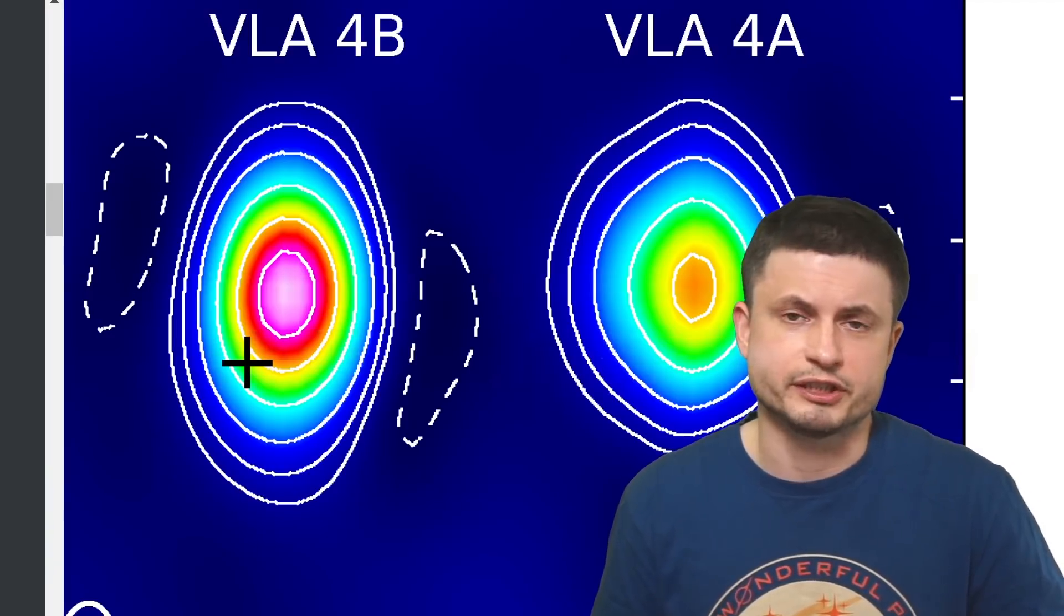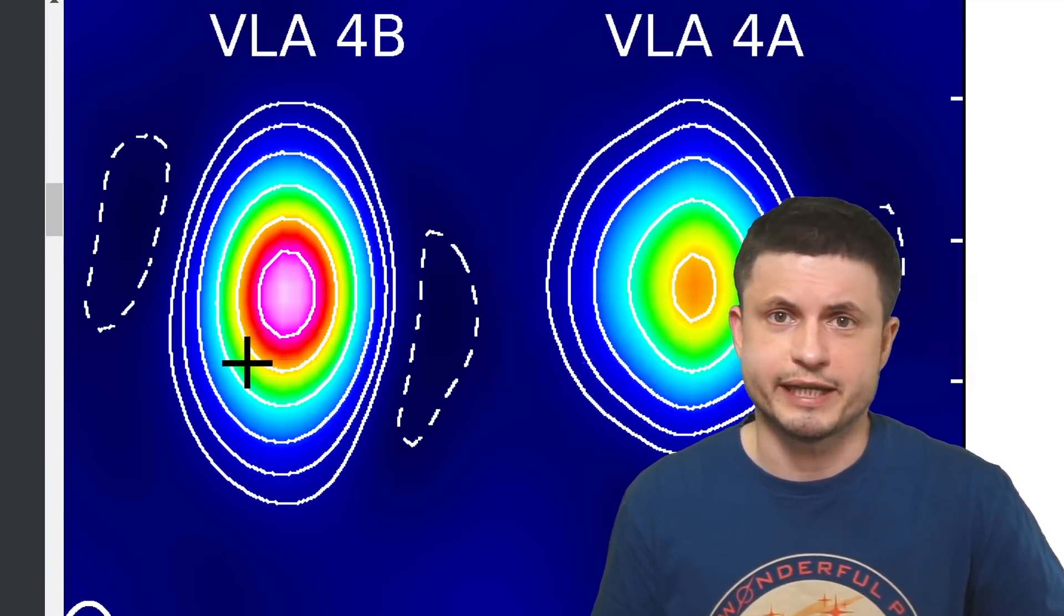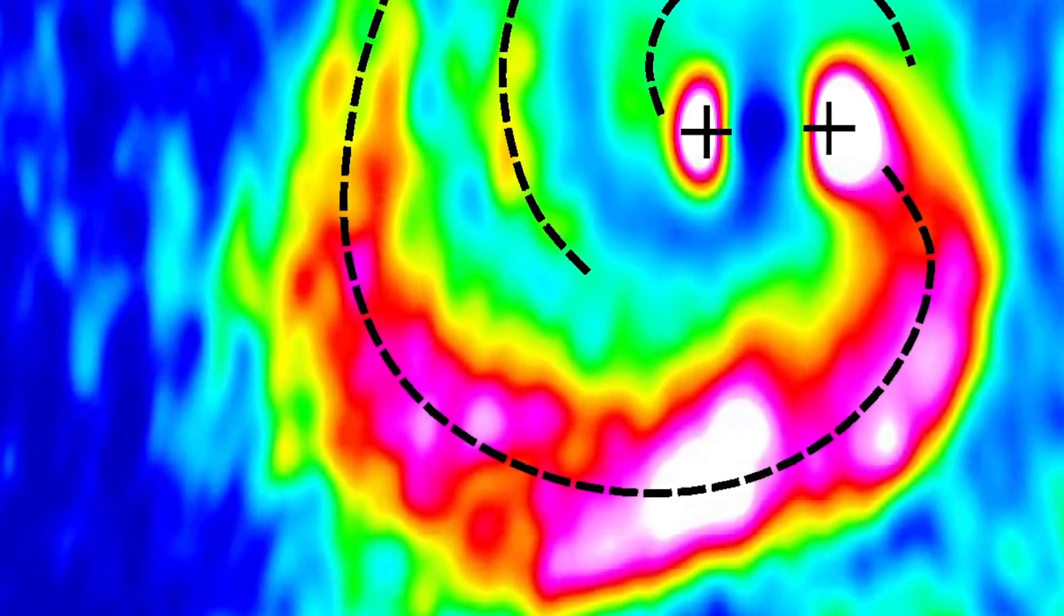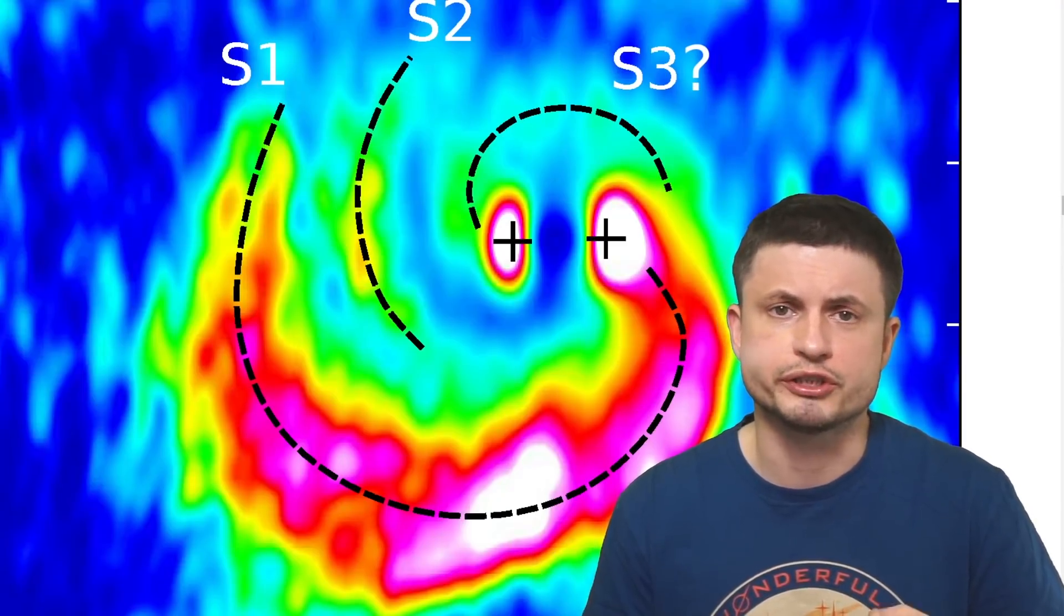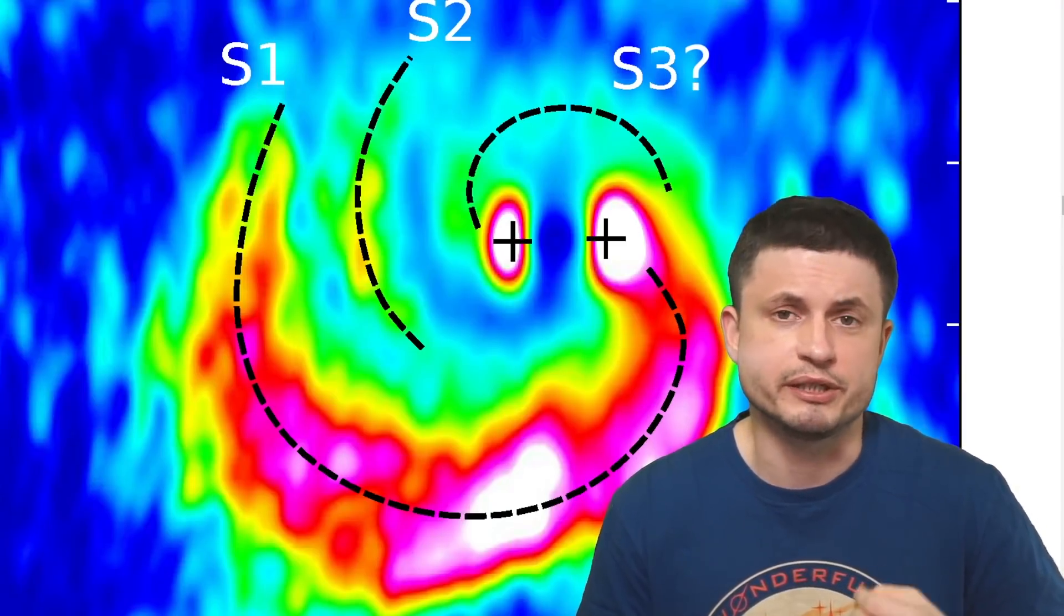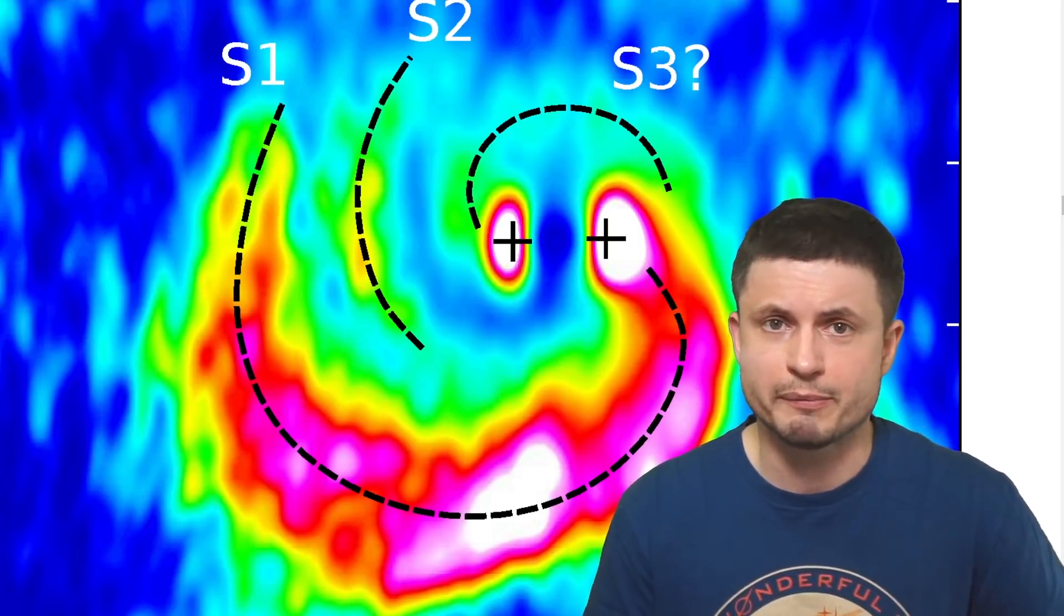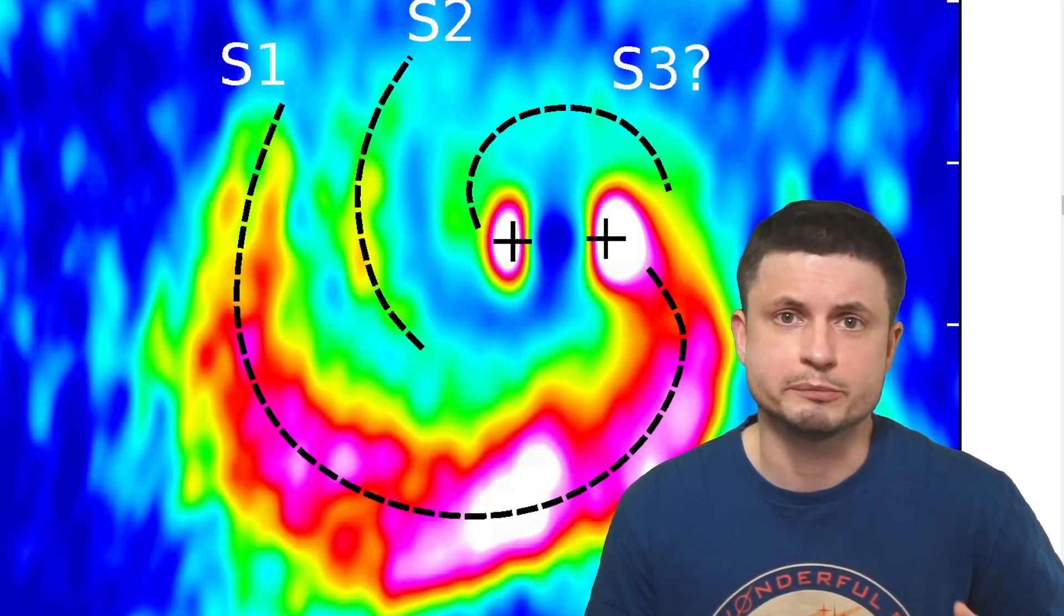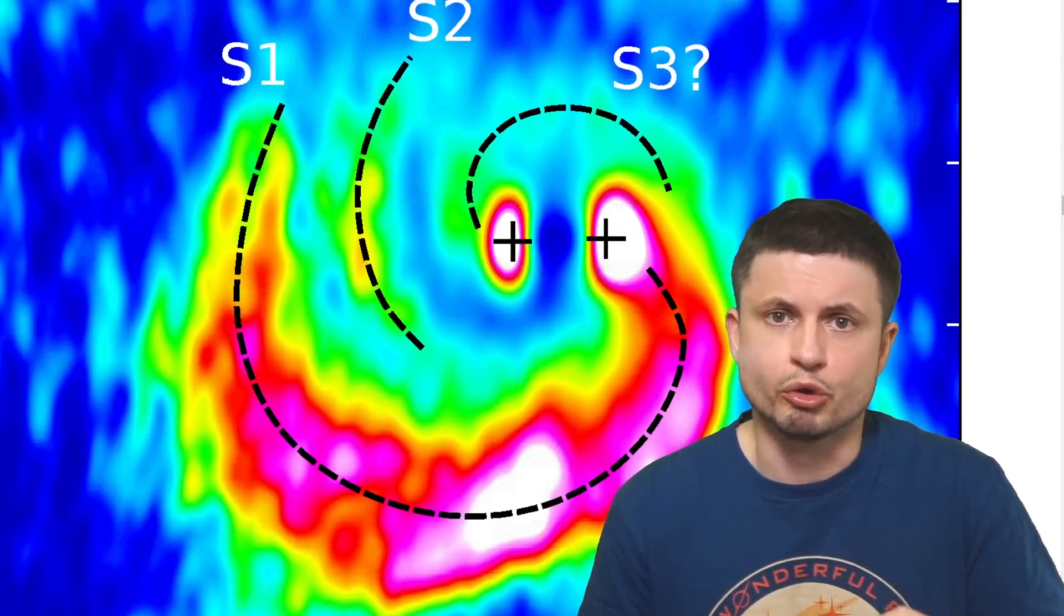Which might result in the production of slightly different star systems or planetary systems around each of these stars. For example, one of them might possess more terrestrial planets, the other one might possess more ice giants and gas giants. And obviously the outer disk itself will also result in some really unusual planets eventually as well. And so even though normally a multi-star system would not actually be beneficial for planetary growth, in this case it seems to be almost the opposite. The presence of multiple disks along with the activity from the star might actually encourage more planets to form.